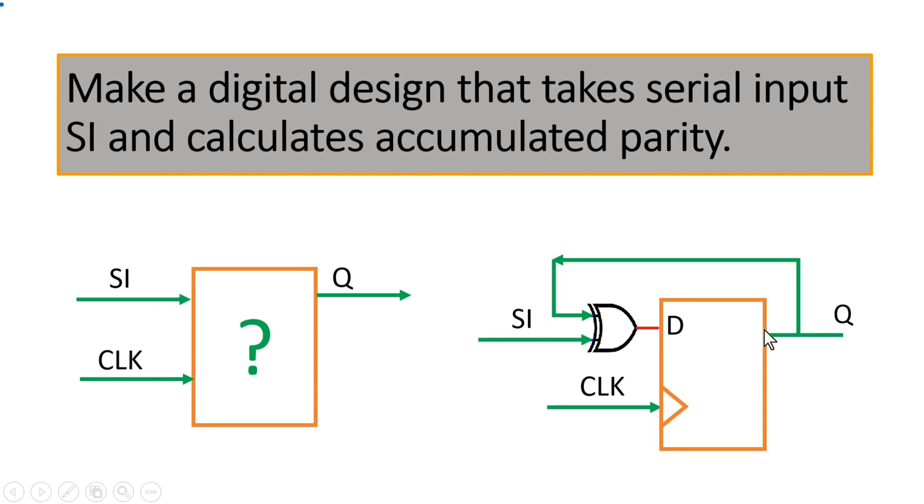So the output of XOR gate will become zero, so zero will be passed to Q. Q will become zero because two ones on SI signal have been transferred. So this way Q is the output which is accumulated parity.